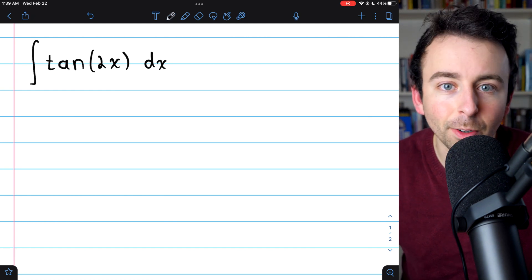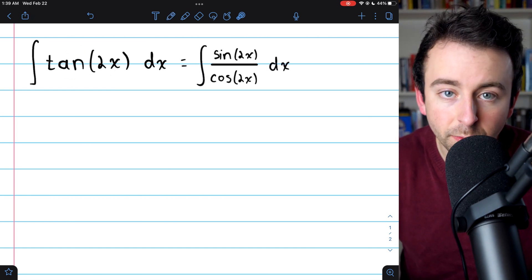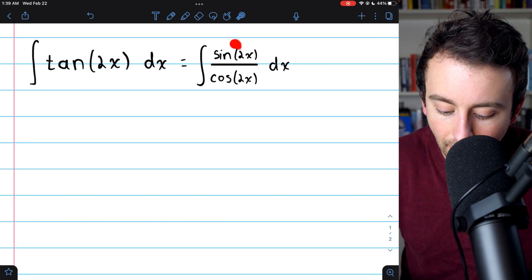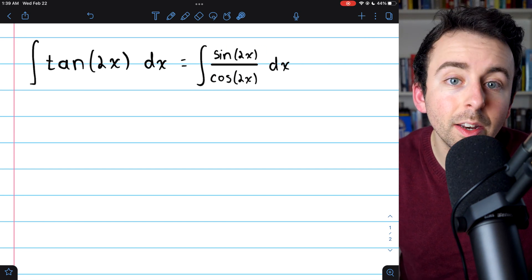That's going to let us rewrite this integral. We know that tangent of 2x is the same as sine of 2x over cosine of 2x.